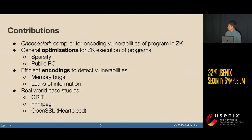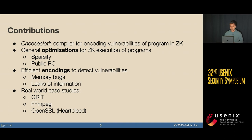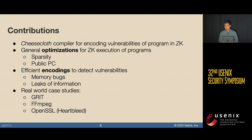These are the contributions of our work. Our compiler Cheesecloth allows you to prove vulnerabilities in zero-knowledge without revealing the triggering exploit. We have general optimizations called Sparsity and Public PC — I won't talk about Sparsity today, so check the paper. We also have efficient encodings to detect different classes of vulnerabilities, specifically memory bugs and leaks of information. We've evaluated Cheesecloth on real-world case studies: GRIT, FFmpeg, and OpenSSL.